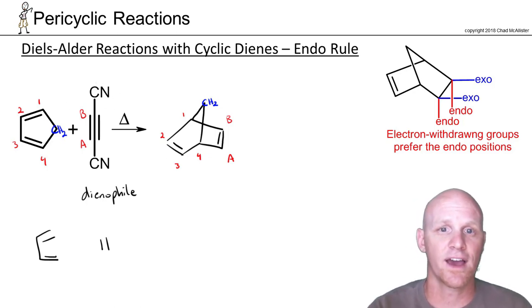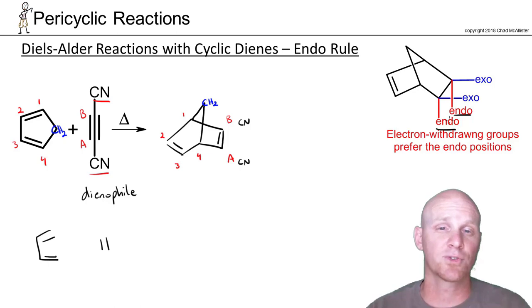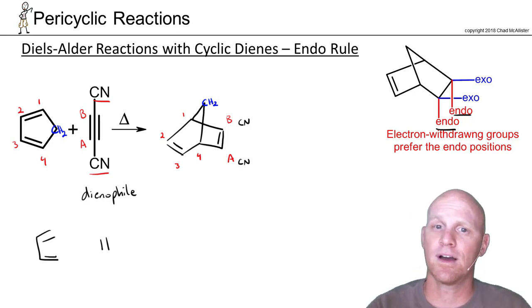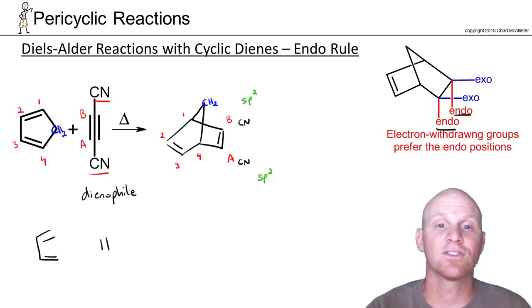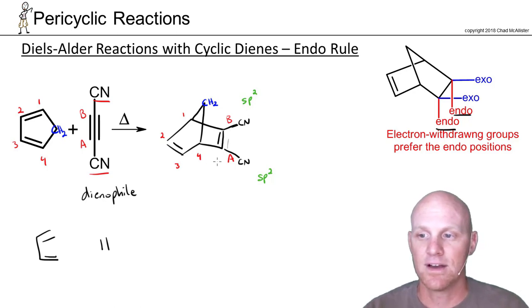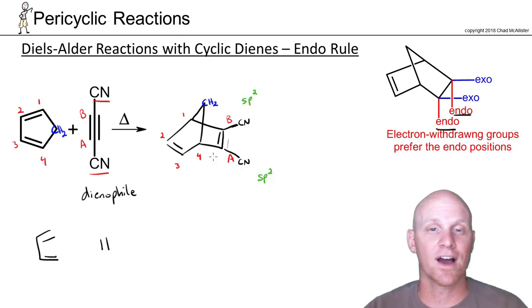I've got these two cyano groups attached to A and B, so one goes here and one goes here. And students might say: endo rule! But in this case, there is no endo rule. The key is that atoms A and B are sp2 hybridized, not sp3 hybridized — they're no longer tetrahedral but trigonal planar, and they're not going to have wedges and dashes at all. Trigonal planar atoms just have straight lines. Don't try to apply the endo rule. This is just the way it is when you start with an alkyne — straight lines, no wedges, no dashes, no endo rule.